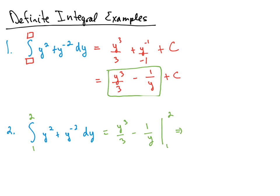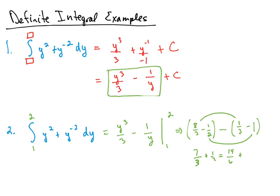So we end up with 2 to the third, which is 8, divided by 3 minus 1 half — all in parentheses — and then we subtract 1 cubed, which is 1, divided by 3 minus 1 over 1, which is just 1. Simplifying: 8 thirds minus 1 third is 7 thirds, and then negative 1 half minus a negative 1 gives us plus 1 half. Getting a common denominator, we'll have 14 over 6 plus 3 over 6, which equals 17 over 6.